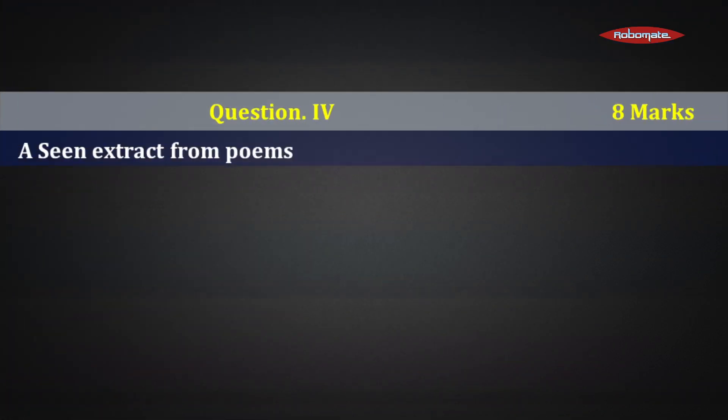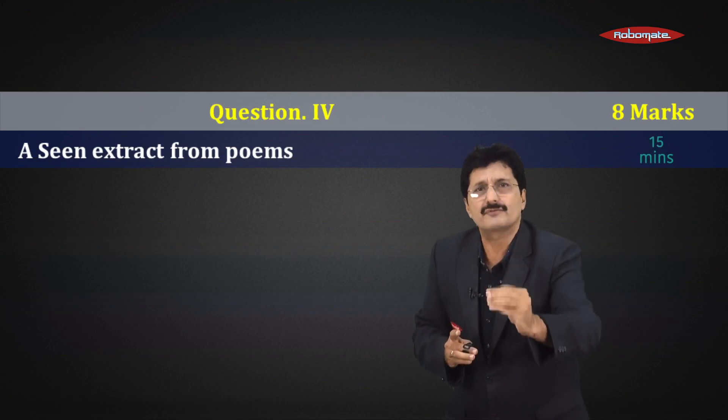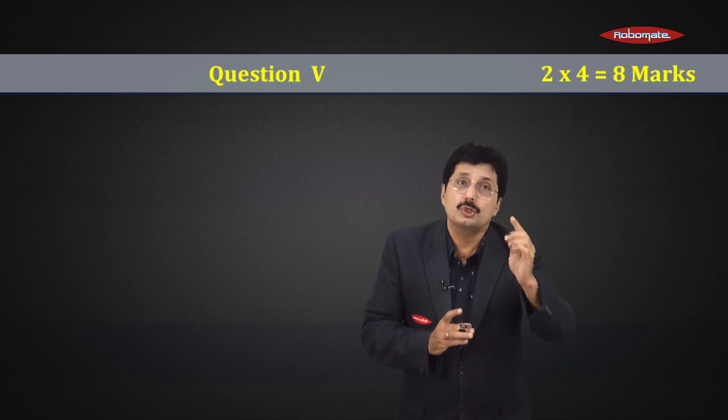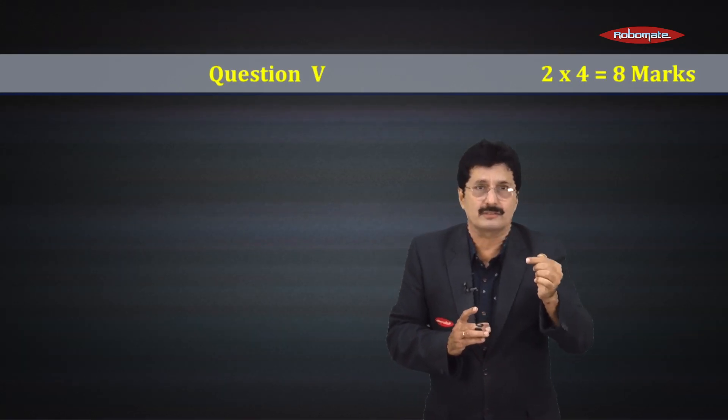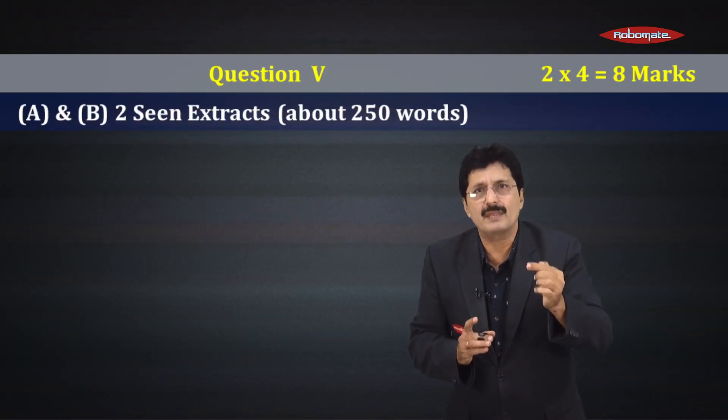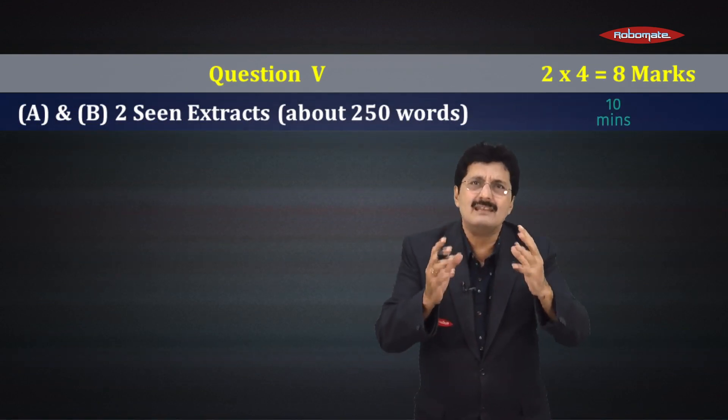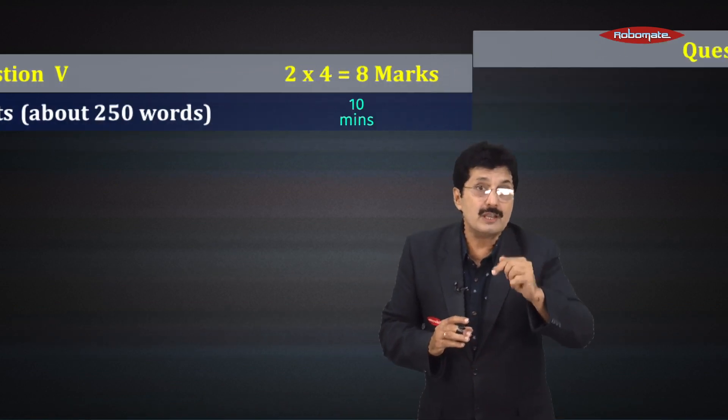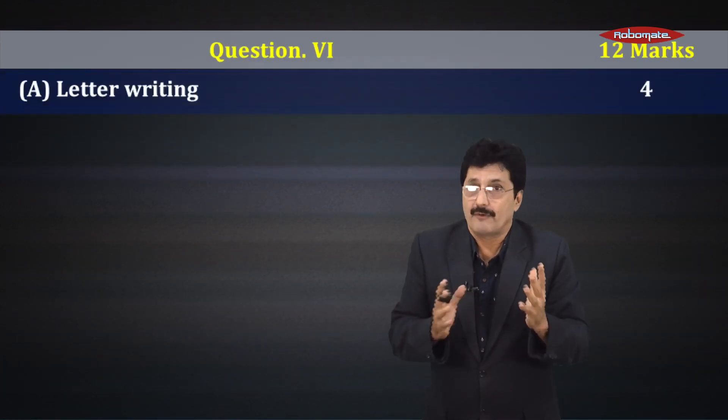Let's look at question number four: seen poems, 8 marks, 15 minutes should be enough here. Question number five: two rapid reading passages, 5A and 5B, 4 marks each, 10 minutes each should be more than enough.